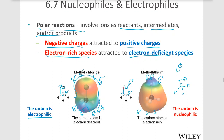So this carbon on the right is nucleophilic — it has a negative charge and a lone pair. The carbon on the left is electrophilic; it wants electron density because it's electron poor. It has a partial positive charge — it's electrophilic, it wants electrons. The one on the right has a negative charge — it's nucleophilic. Nucleophilic means it wants a nucleus, and nuclei have positive charges. The electrophilic carbon on the left wants electrons — it wants a negative charge because it has a positive charge.